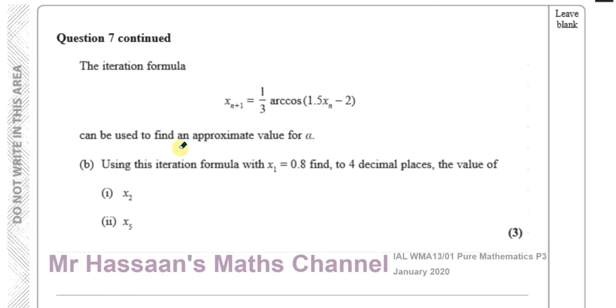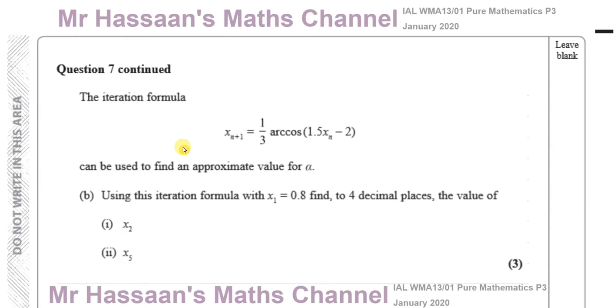Okay, part B, it says the iteration formula, x equals n plus 1 equals 1 third arc cosine 1.5 x n minus 2 can be used to find an approximate value for alpha. Using this iteration formula with x1 equals 0.8, find to 4 decimal places the value of x2 and x5. Okay, now that's a little trick there. You could have not seen that as x5 if you didn't look carefully enough.